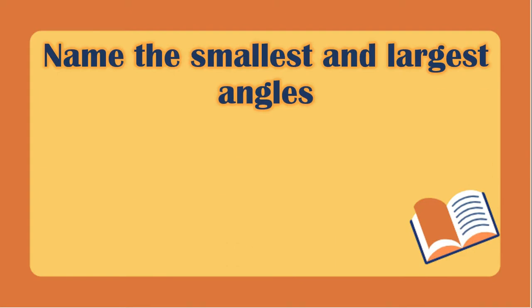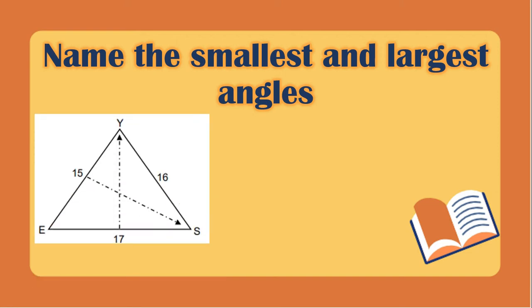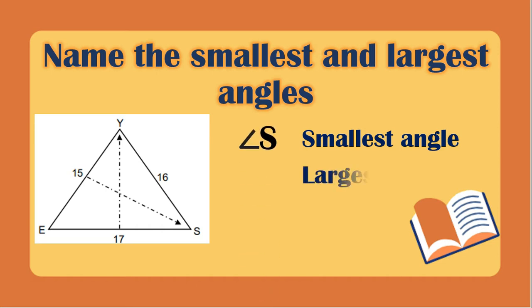We will name the smallest and the largest angles in each triangle. In this example, you need to look first at the smallest angle — which side is the shortest. We have side YE, and the opposite of side YE is the smallest angle. For the largest angle, you will just look at the longest side, which is side ES, and the opposite of side ES is angle Y.